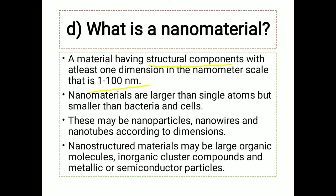Nanomaterials are larger than single atoms but smaller than bacterial cells — their size is in between a single atom and a bacterial cell. These may be nanoparticles (size in the range of 1 to 100 nanometers), nanowires, and nanotubes according to their dimension. Examples include large organic molecules, inorganic cluster compounds, and metallic or semiconductor particles.